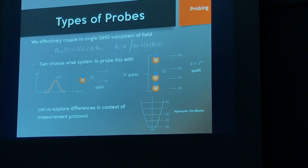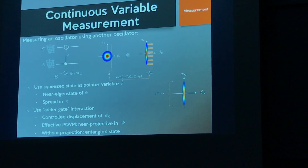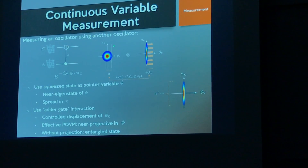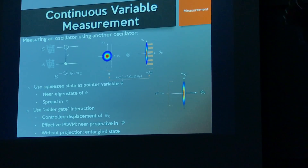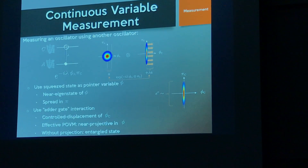We'll explore the differences between these different probes, first in the context of a measurement protocol. For a continuous variable measurement, say I want to measure a harmonic oscillator A using a control system C. I start my control system in a very narrow squeezed state, then do a controlled displacement depending on the quadrature value of A — displacing by a scalar multiple of that amount. Because we have a very sharp pointer variable, projecting the control register gives a near-projective POVM. Very often we'll skip the projective measurements and keep everything coherent, since it's equivalent.